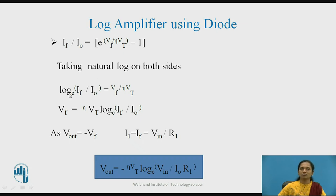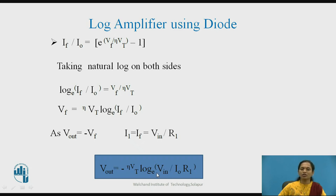Taking the natural log on both sides, we get the equation in terms of Vf by eta·Vt. So Vf equals eta·Vt times ln(If/I0). Since If equals I1 equals Vin/R1, and the output voltage is opposite to the feedback voltage — Vout equals minus Vf — substituting all values gives Vout equal to minus eta·Vt times ln(Vin / (R1·I0)). Thus, the output voltage is directly proportional to the logarithm of the input voltage signal.